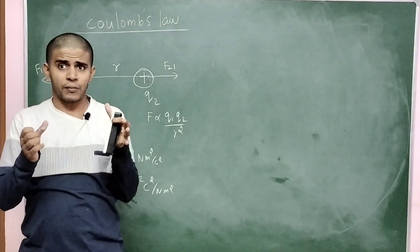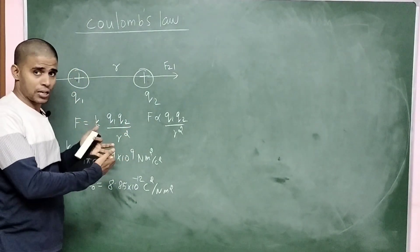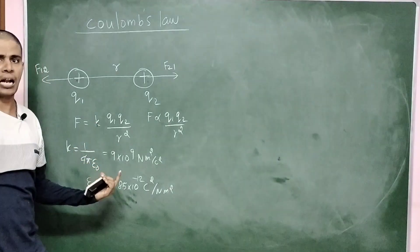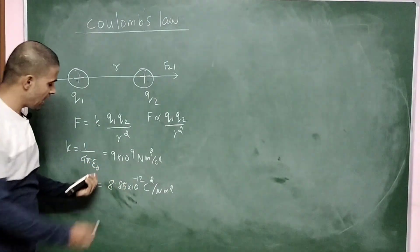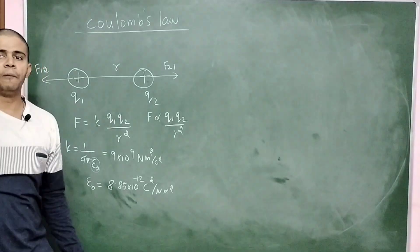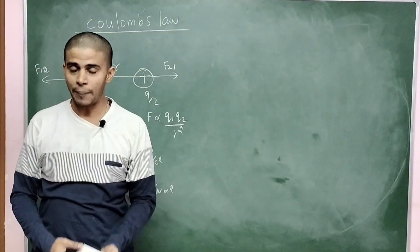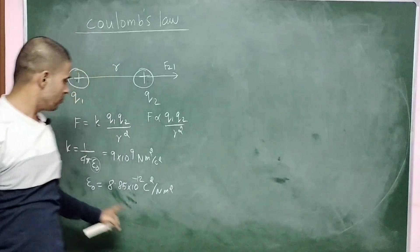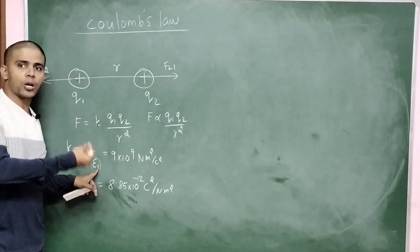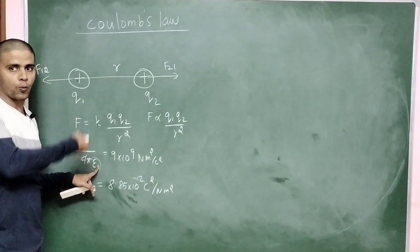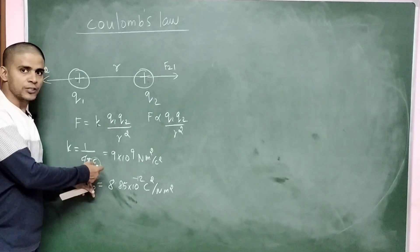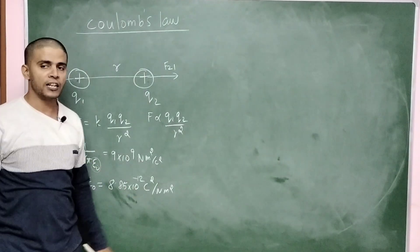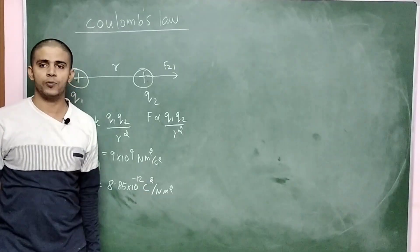We can also expand K as 1 divided by 4πε₀, where ε₀ is the permittivity of empty space, since the two charges are placed in a vacuum or empty space. The value of ε₀ is approximately 8.85 × 10⁻¹².